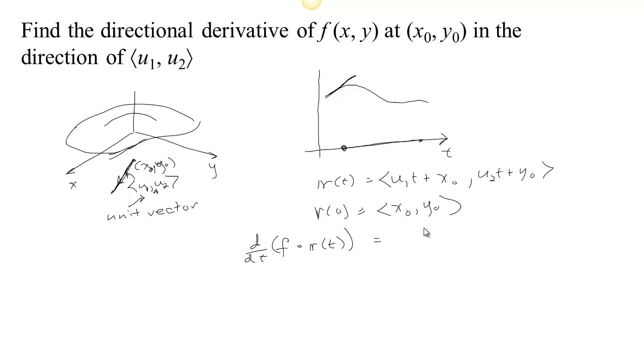And of course the chain rule says that what we need to do is this function f, we need to multiply the total derivatives. So this function f, it has a derivative ∂f/∂x and a derivative ∂f/∂y and then we have to multiply that by the total derivative of this function r.